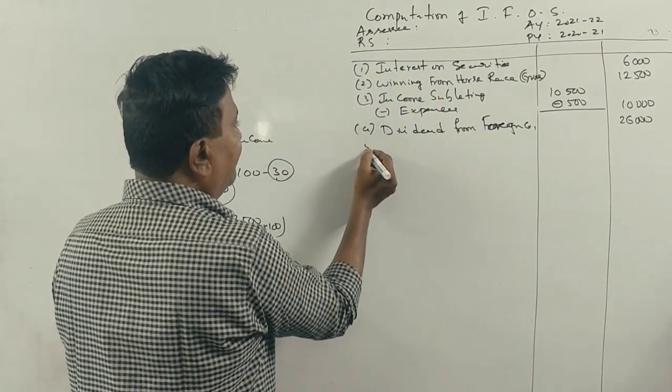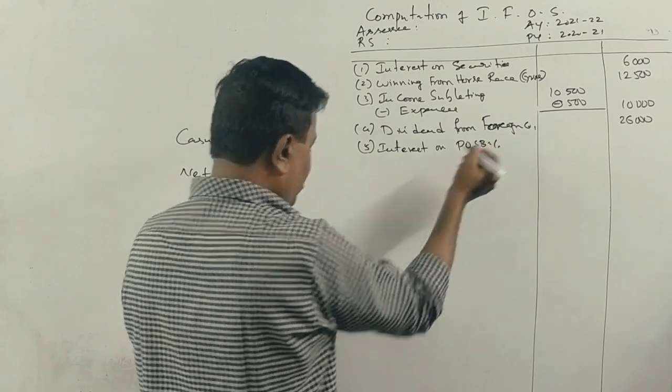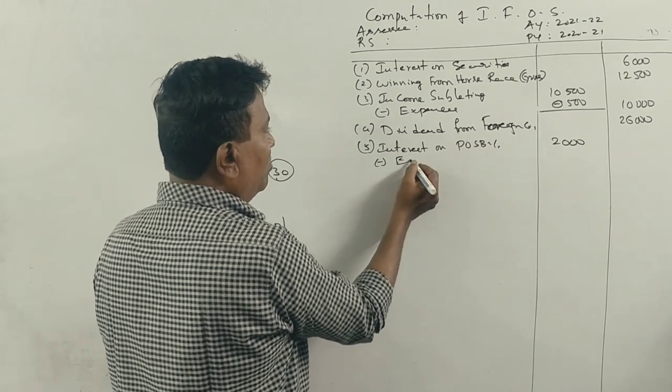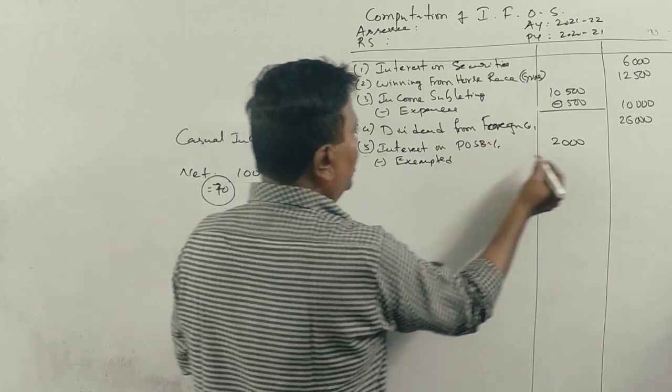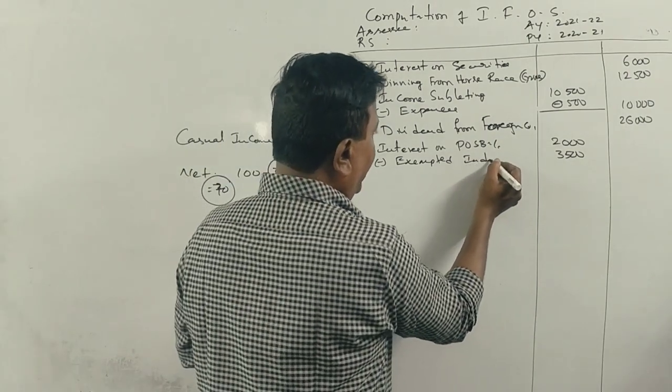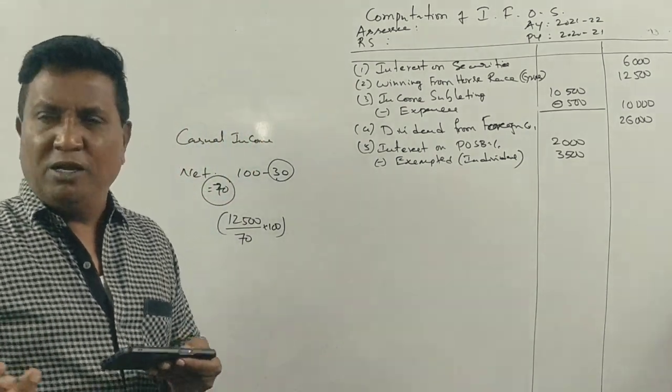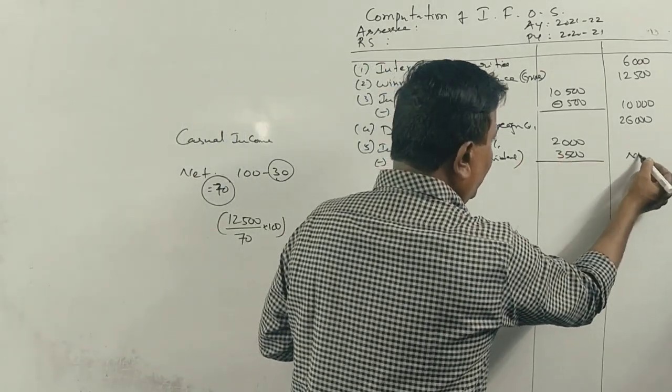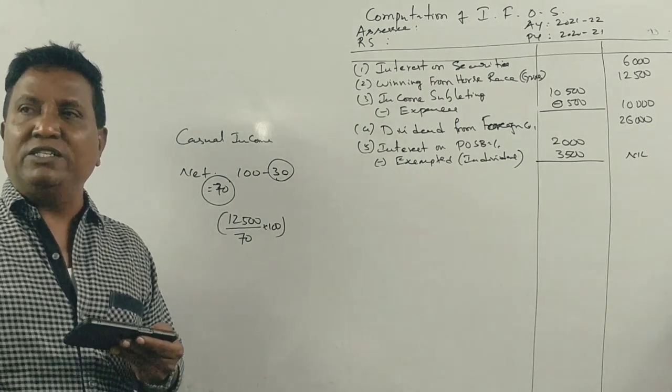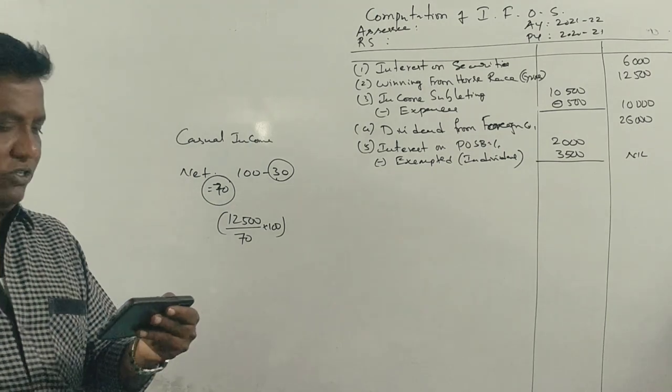Interest on Post Office Savings Bank. Interest on Post Office Savings Bank account is exempted up to Rs. 3,500 for exemption. In a joint name, it will be given as a deduction of Rs. 7,000 for exemption.